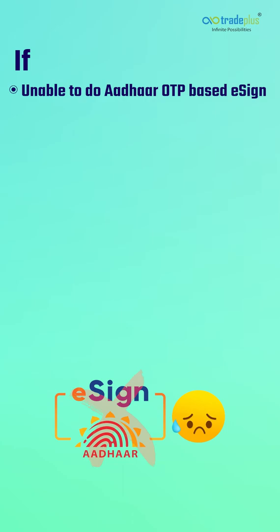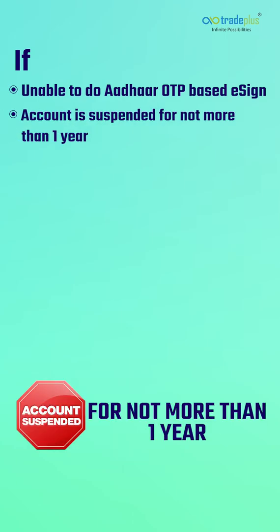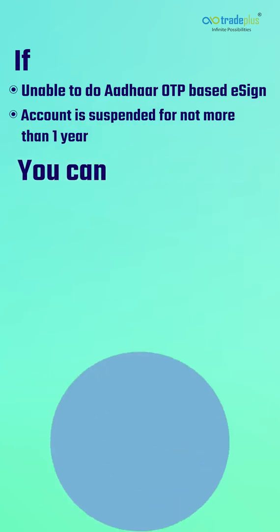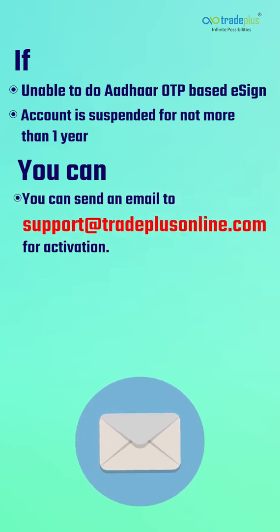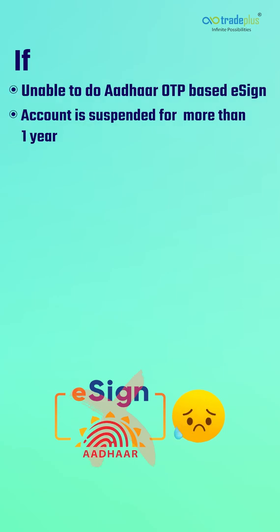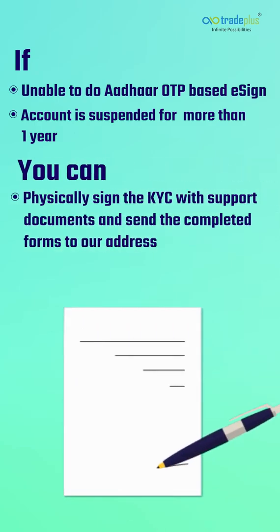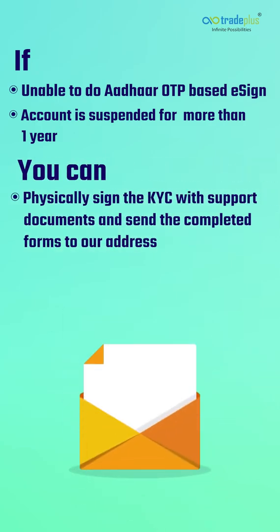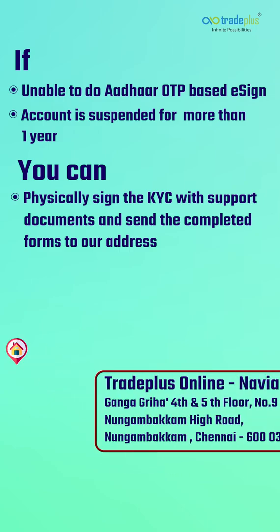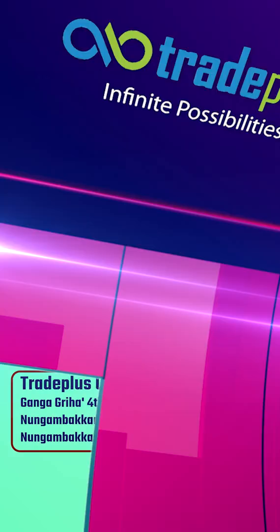Note: if you are unable to do the Aadhaar OTP-based eSign and your account is suspended for more than one year, you can send an email to support at tradeplus online for activation. If you are unable to do the Aadhaar OTP-based eSign and your account is suspended for more than one year, you need to physically sign the KYC with support documents and send the completed forms to our address. The address details are mentioned in the description below.